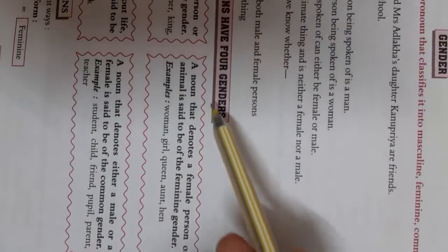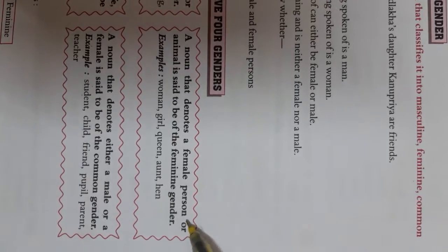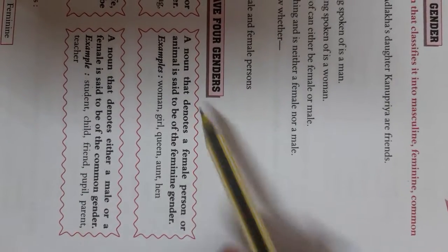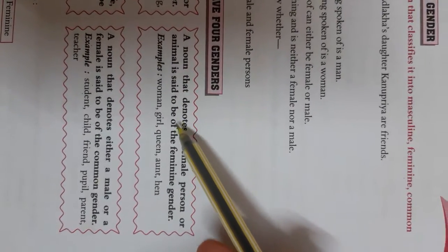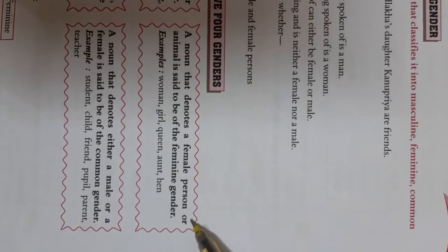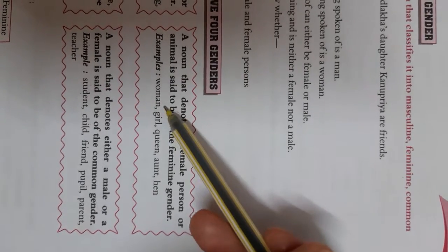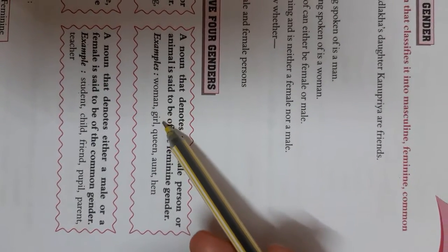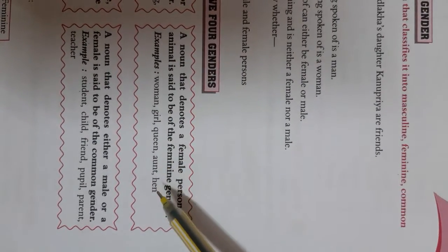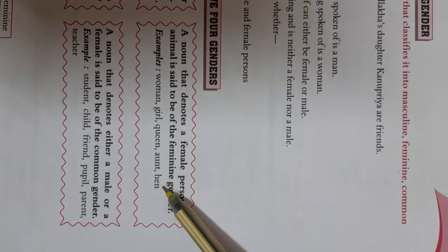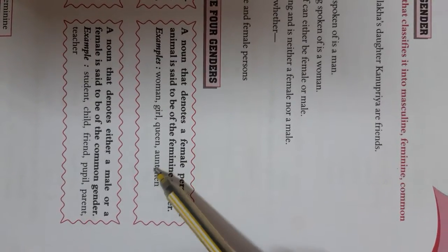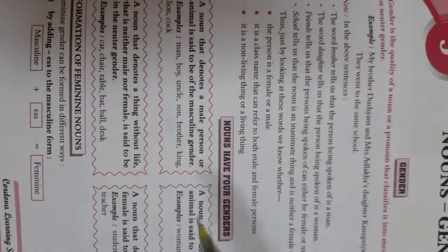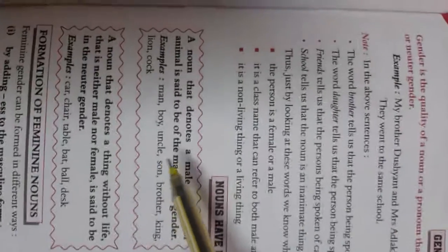A noun that denotes a female person or animal is called the feminine gender. Woman, girl, queen, aunt, hen — these are the feminine gender, denoting a female person or animal.